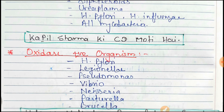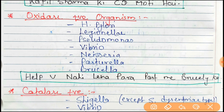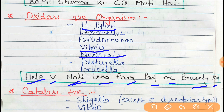Next is oxidase positive organisms. The trick is 'help bhi nahi lena para past me brusli ko'. Here, 'help' — H for H. pylori; B for Vibrio cholerae; 'nahi' — N for Neisseria gonorrhoeae; 'lena' — L for Legionella.